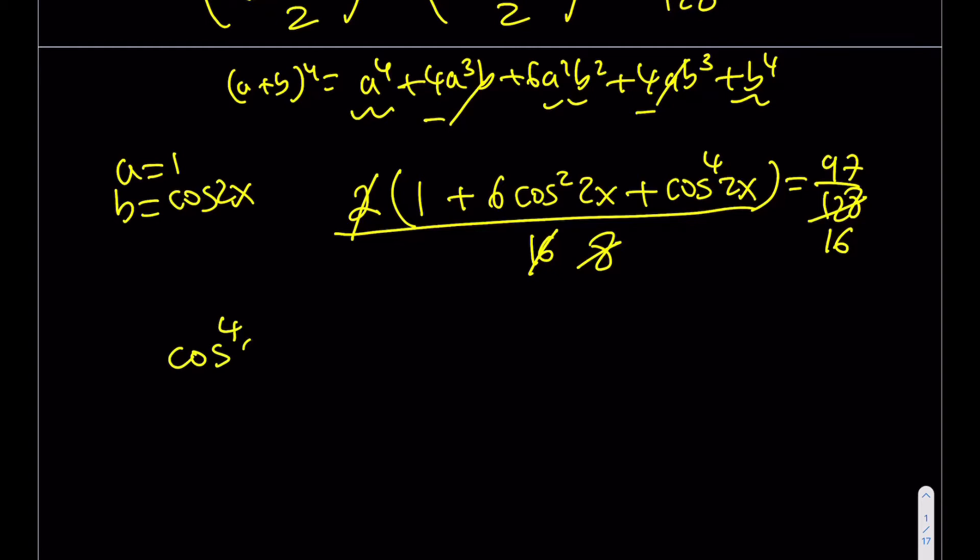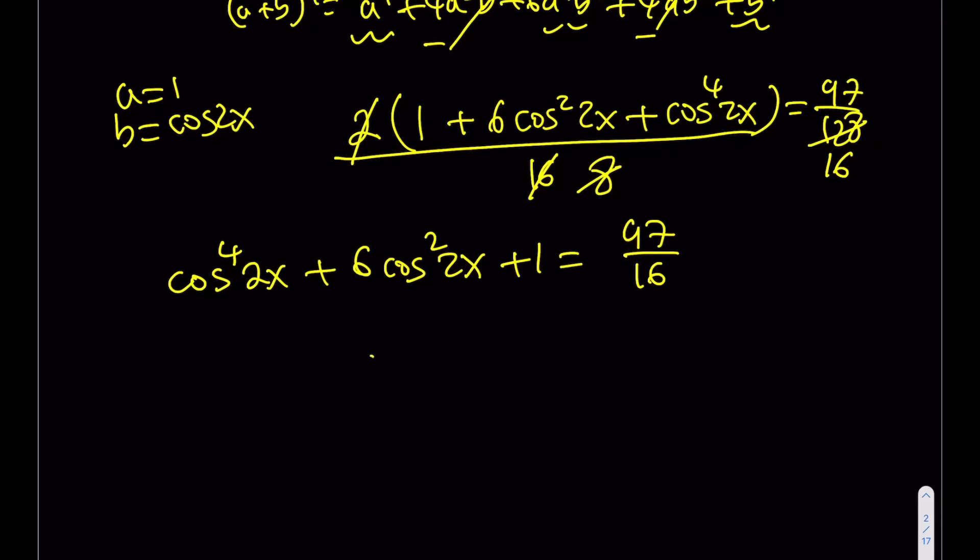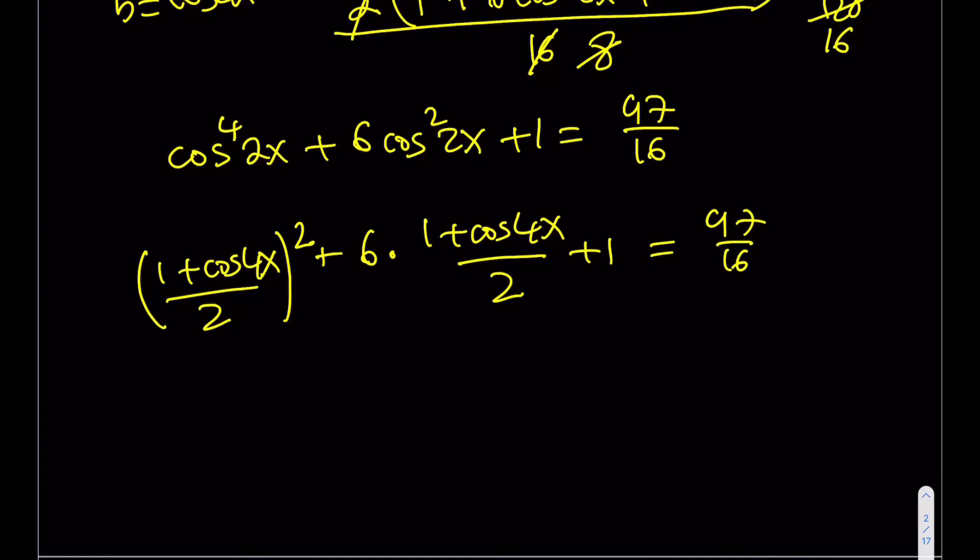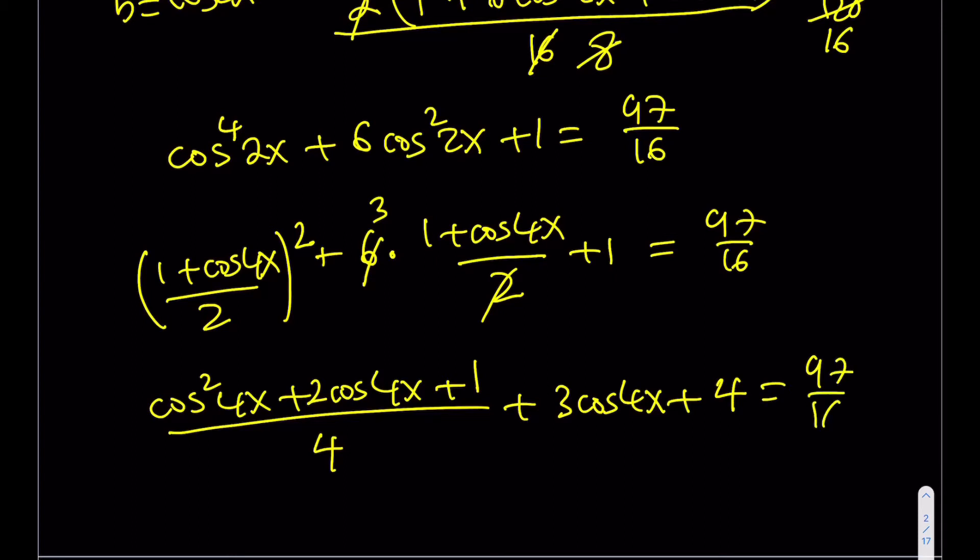So I get a simpler expression. Cosine 2x to the fourth power plus 6 times cosine 2x to the second power plus 1 is going to equal 97 over 16. We're going to simplify this even more by using the double angle formulas again. So what I can do is I can replace cosine squared 2x with 1 plus cosine of 4x over 2. And this one is going to be that expression squared plus 1 is going to be 97 over 16.